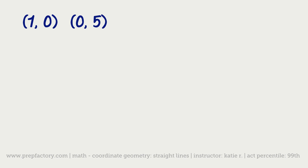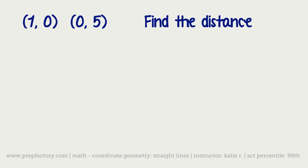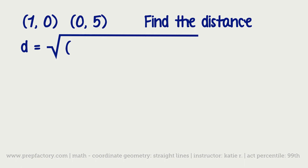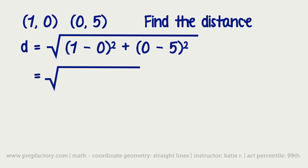Let's do a real example: what is the distance between (1, 0) and (0, 5)? Distance equals the square root of (1 minus 0) squared plus (0 minus 5) squared. That's the square root of 1 squared plus negative 5 squared, which is the square root of 1 plus 25, so the answer is the square root of 26.